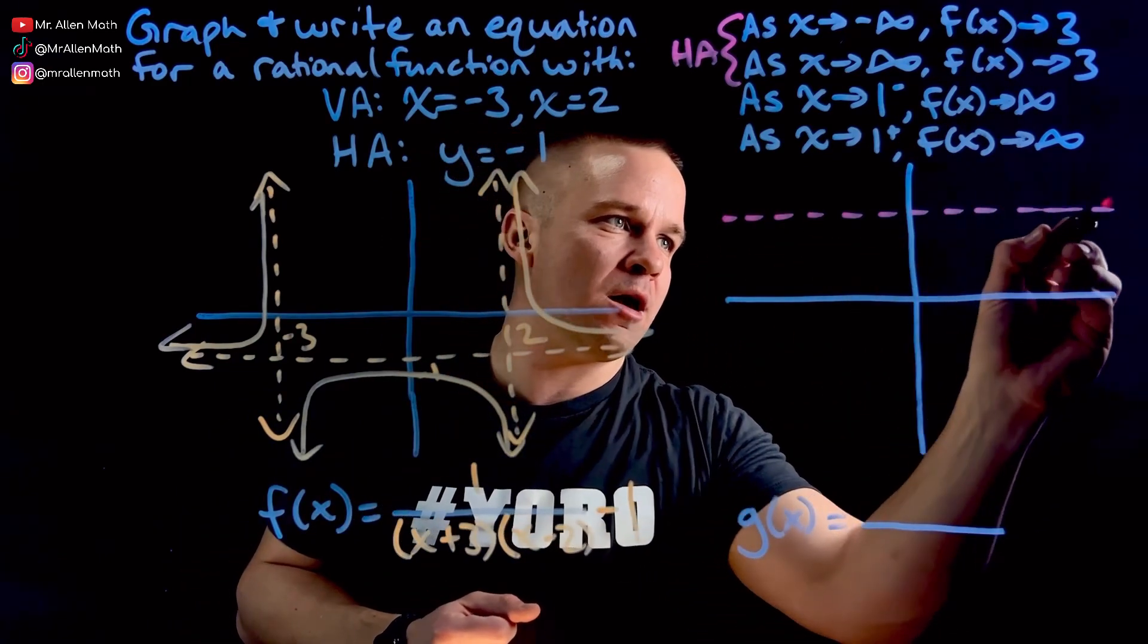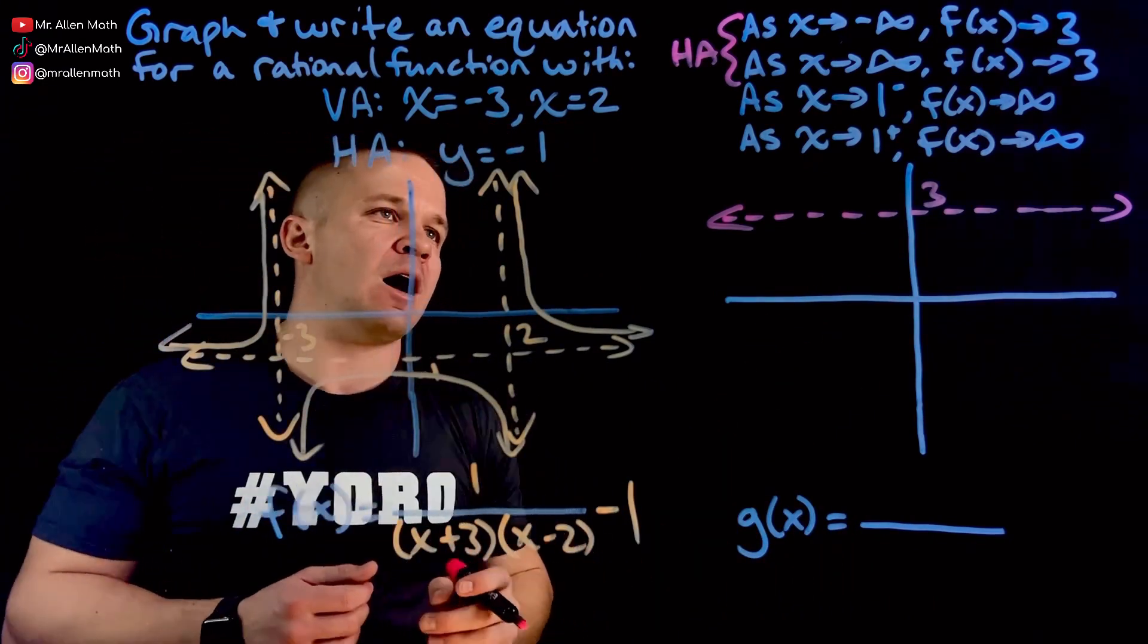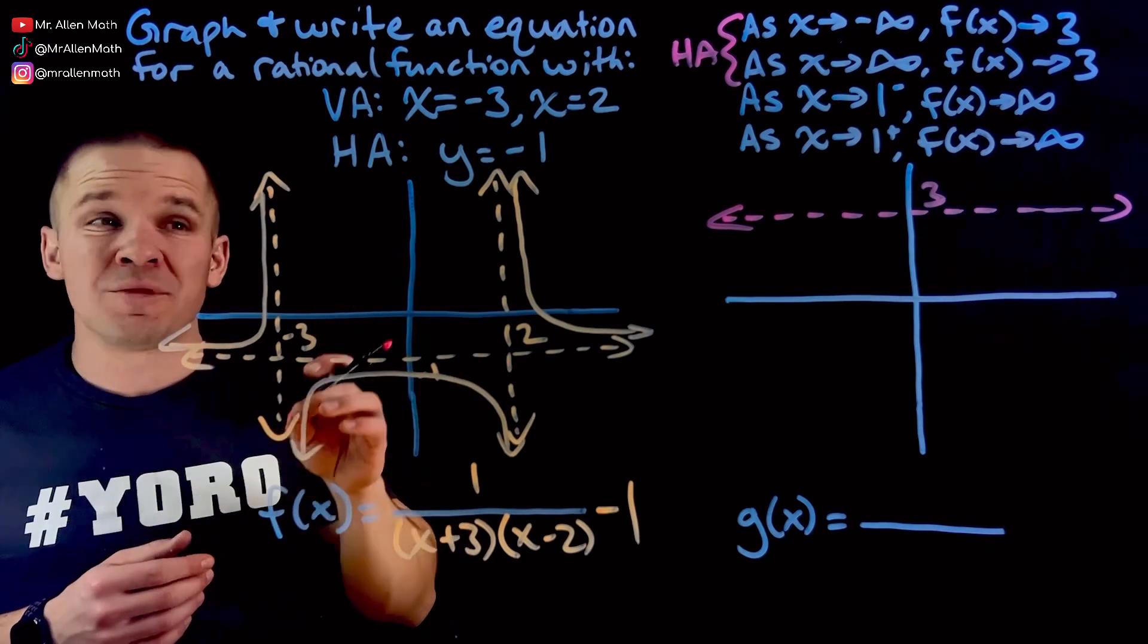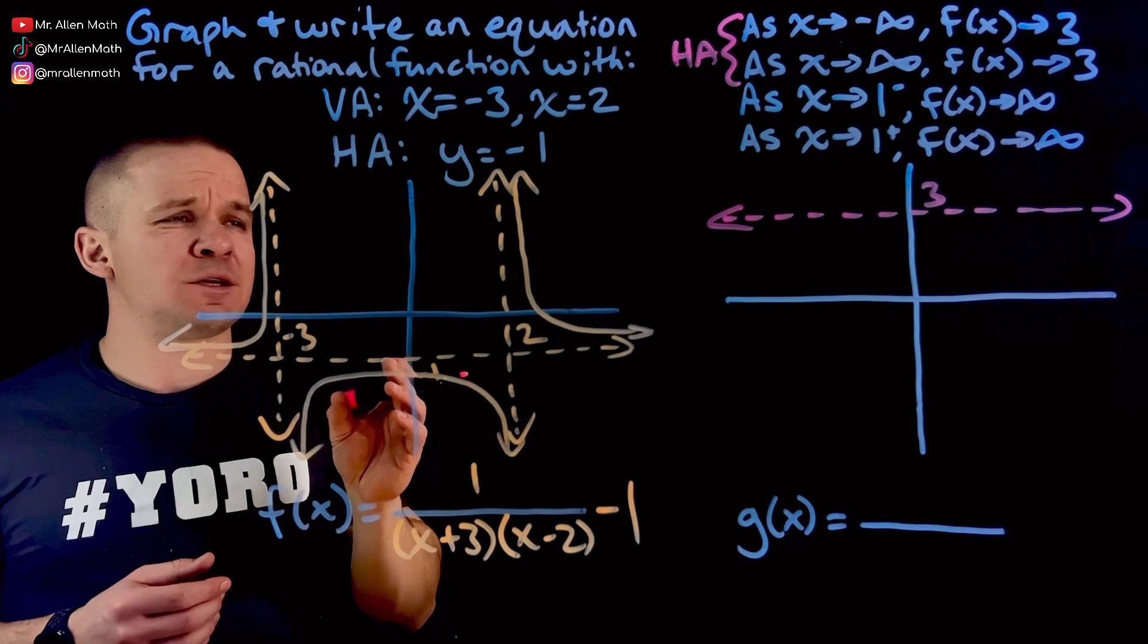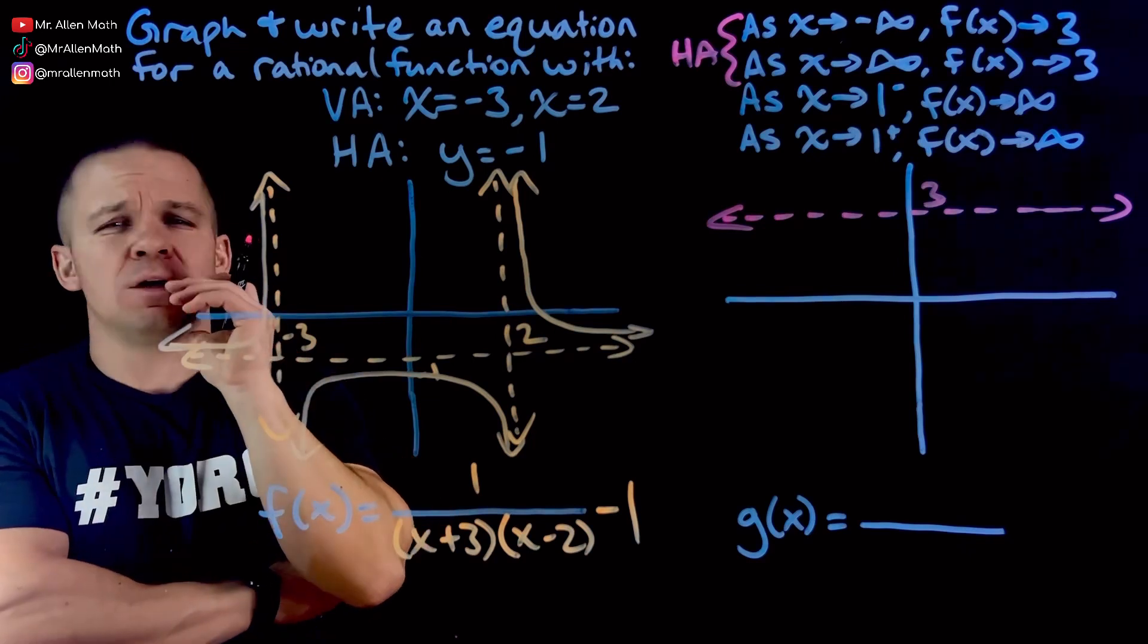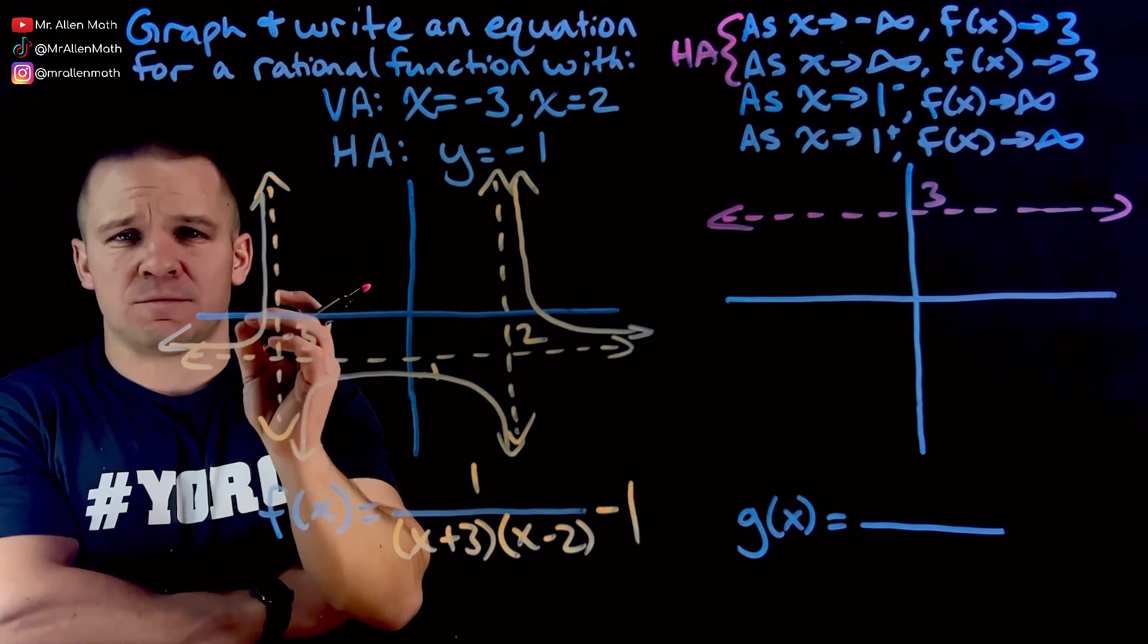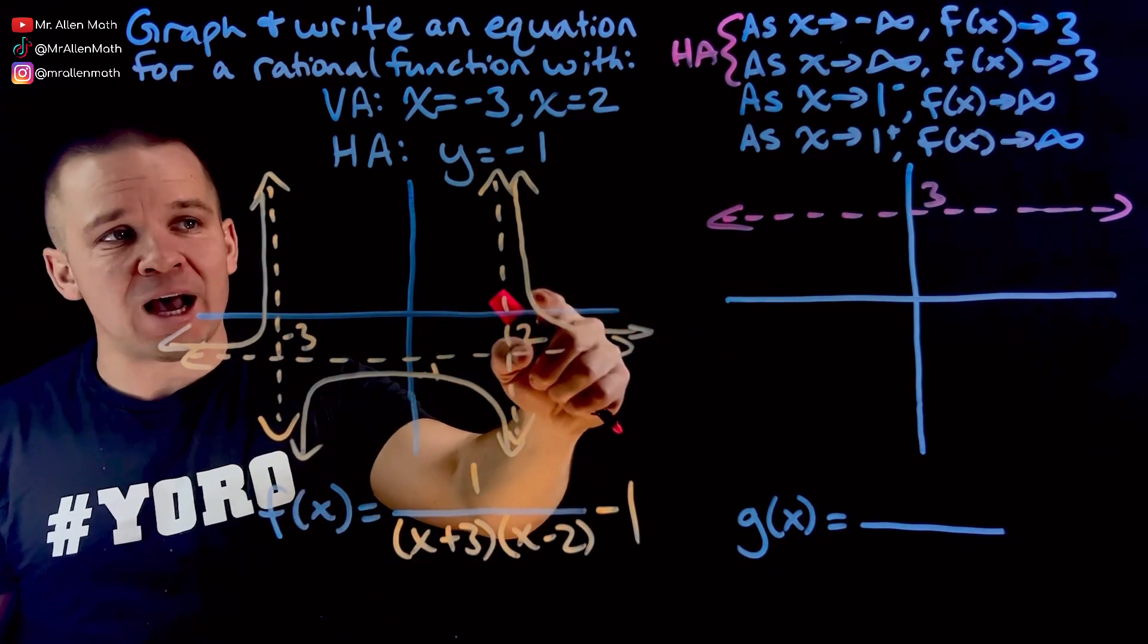We'll pop this guy right up here. I'm going to throw a three right there. We're in business right now. Next up, as x approaches one from the left, f(x) is approaching infinity. And as x approaches one from the right, f(x) is approaching positive infinity. Interesting. So that right there would be my vertical asymptote. Let me show you over on this one.